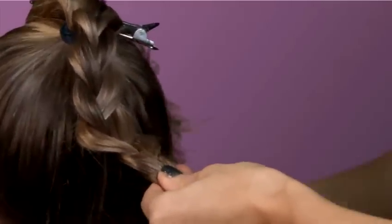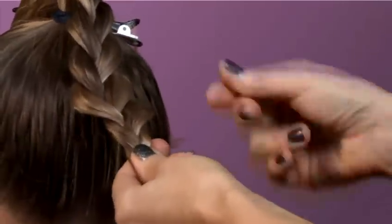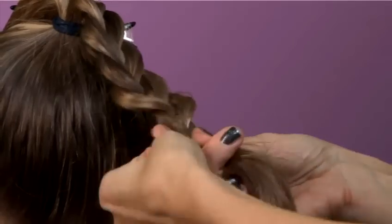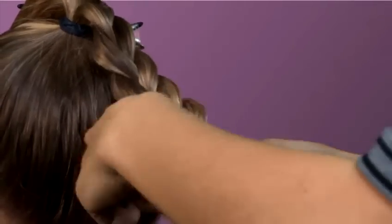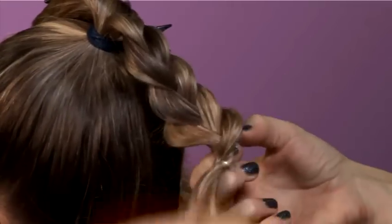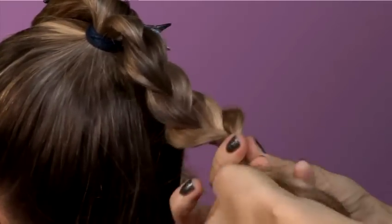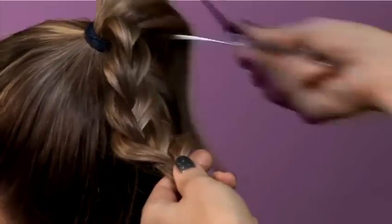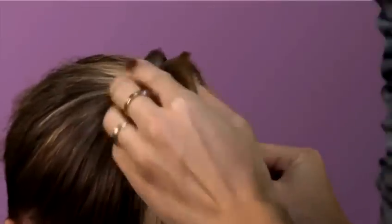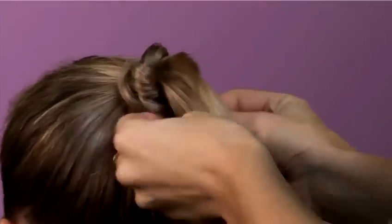Using a see-through hairband, we secure the braid. And now just wrap it round the ponytail. It's nice and tight.